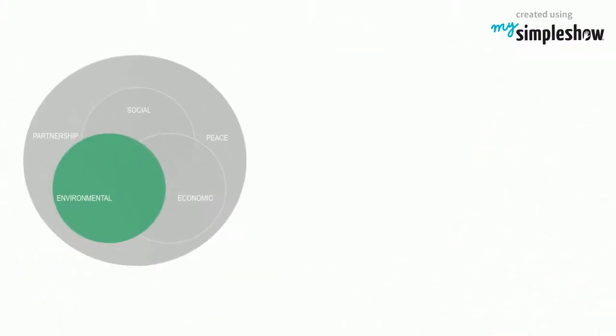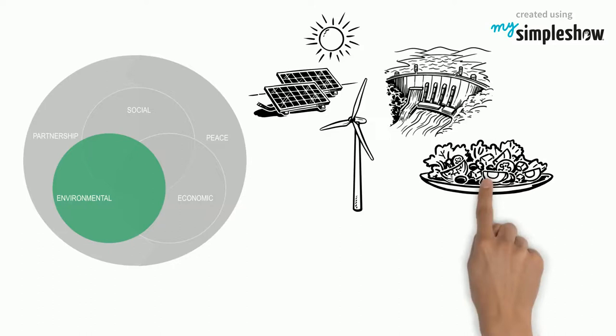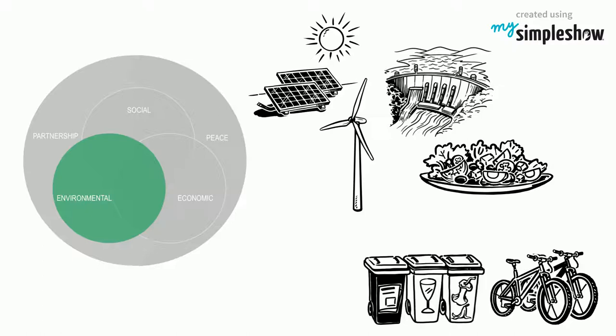We can also reduce the negative impacts that our unsustainable actions have on our Earth. By moving away from fossil fuels, cutting back on large-scale meat production and using resources more sustainably, we can make our planet healthier.